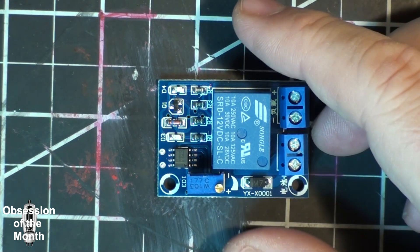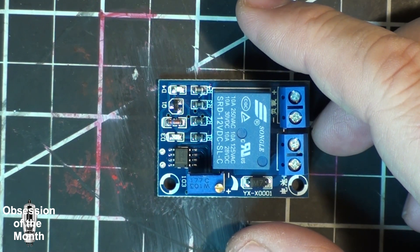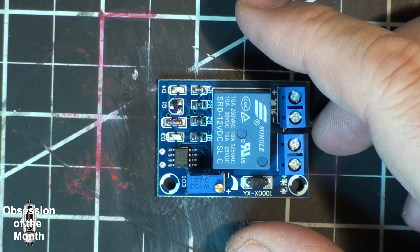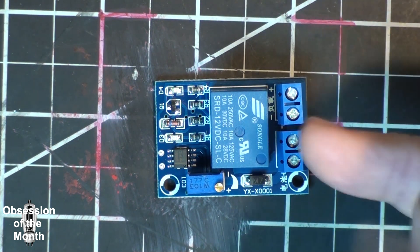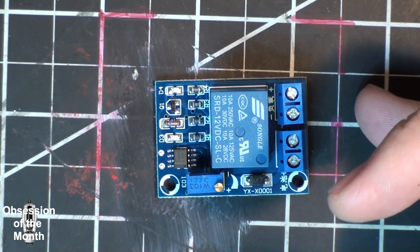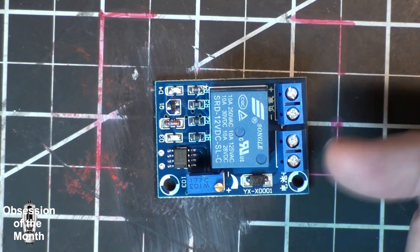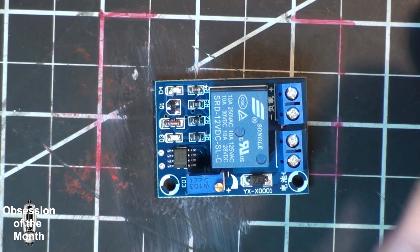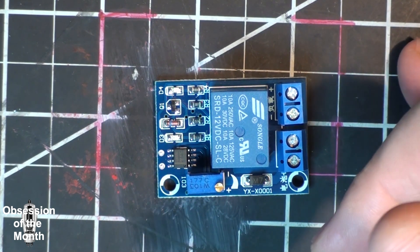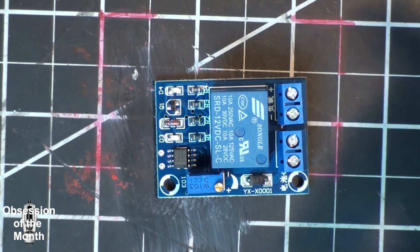And it says that it'll cut out at 10.5 volts. When the voltage rises again, let's say you have a battery charger that kicks in or you put it on a battery charger, it'll immediately turn back on.